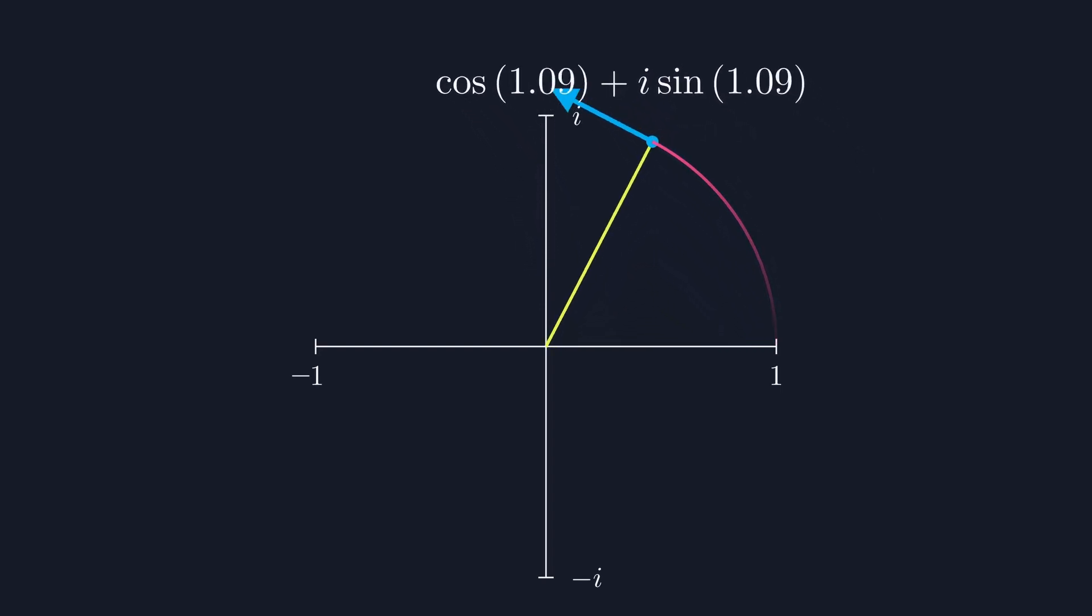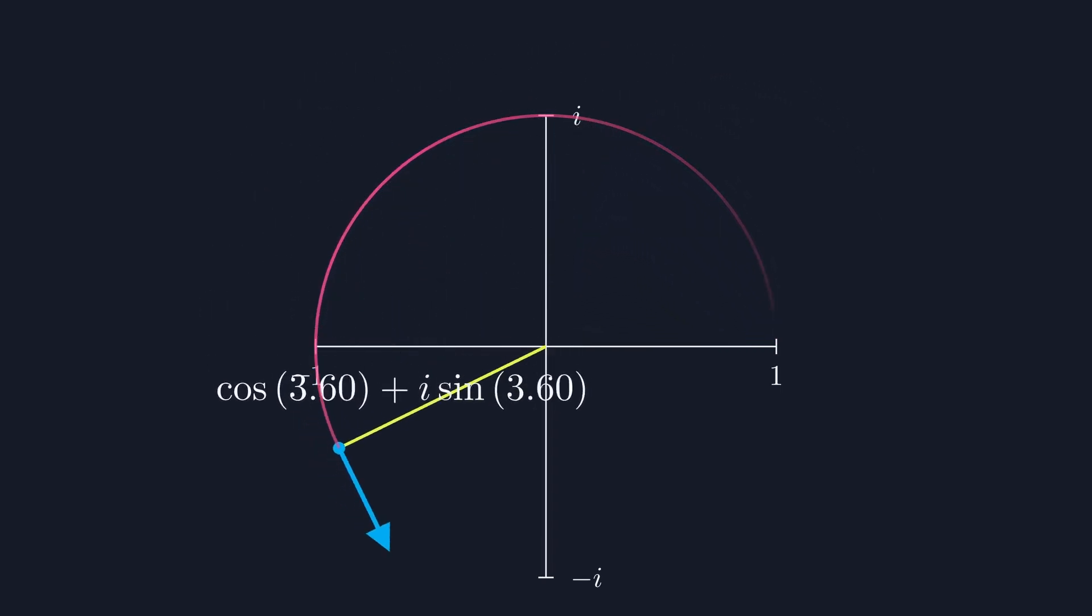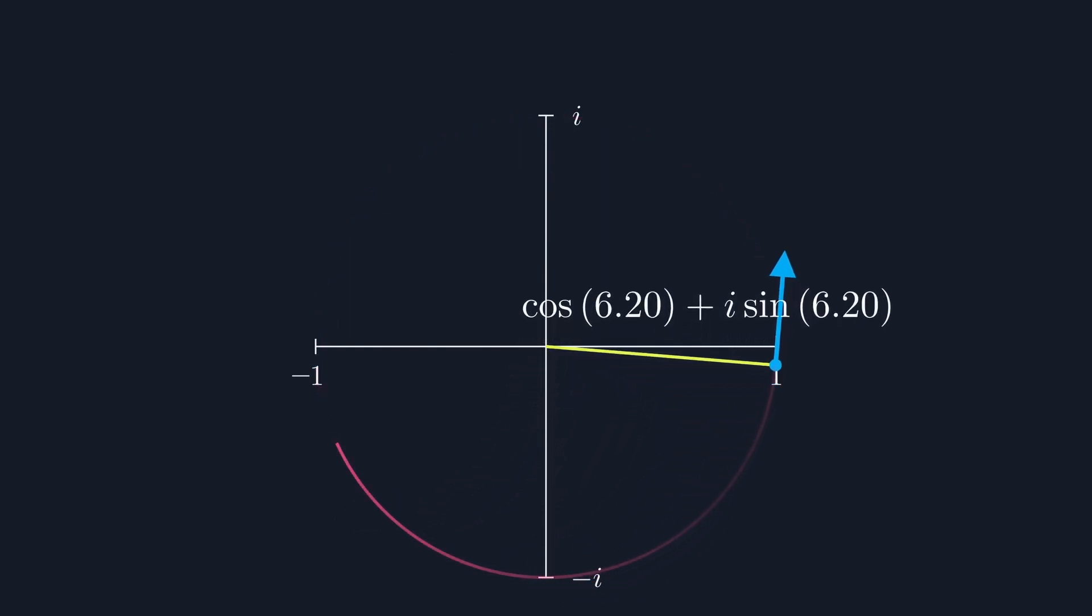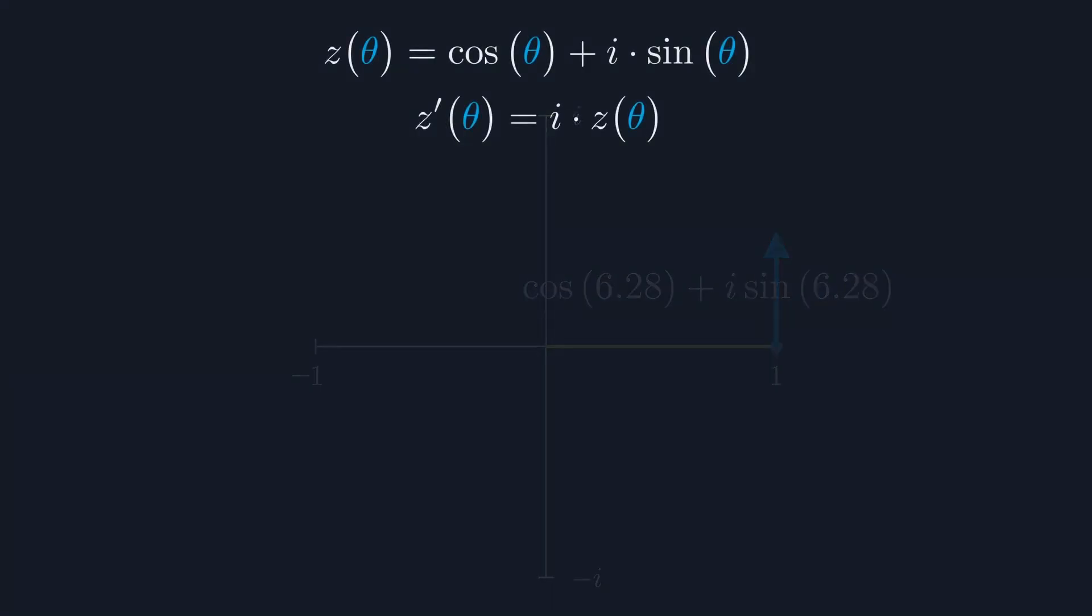You can consider this the point being dragged around the circle by the velocity vector, similar to how you might draw a circle with a piece of string by fixing the piece of string at a point and pulling the pencil around the circle. Notice that all exponents share the property that an angle of 0 equals 1, meaning that we need to find an exponent with the same velocity. Such an exponent will solve our problem.